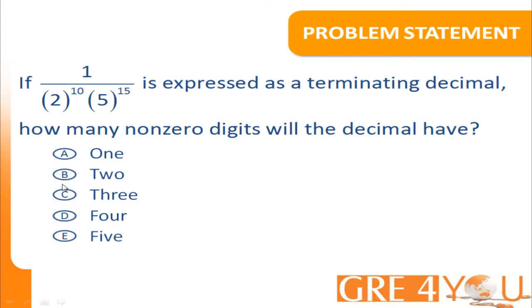In this video, we're going to take a look at a particular kind of exponent problem. Let me read it out for you. If 1 over 2 to the power 10 times 5 to the power 15 is expressed as a terminating decimal, how many non-zero digits will the decimal have?